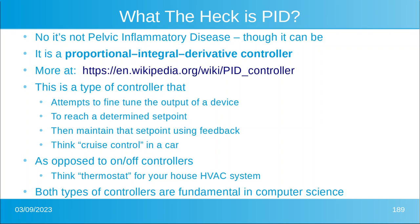This is opposed to on/off controllers, like the thermostat for your house HVAC — that one just turns it on and then turns it off. If your cruise control worked like that, it would push the accelerator to one hundred percent until you got to, say, 60 miles an hour plus or minus two, and then it would simply turn off the engine and let you cruise until you got to say 58 miles an hour, and then it would push the accelerator to a hundred percent again — and that would be really jerky, and that's not what we want.